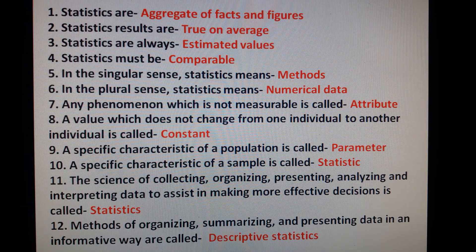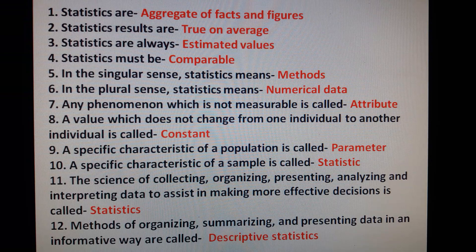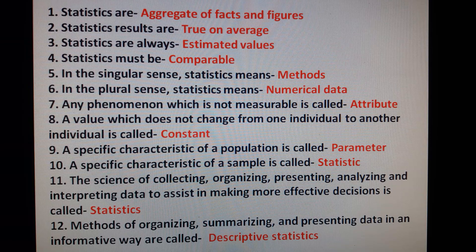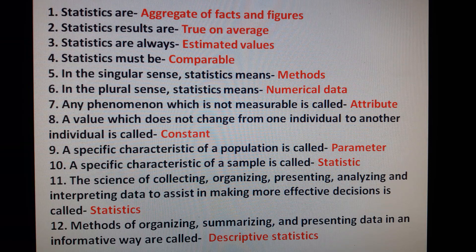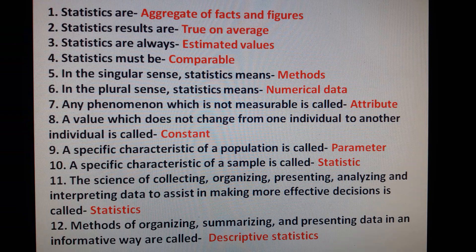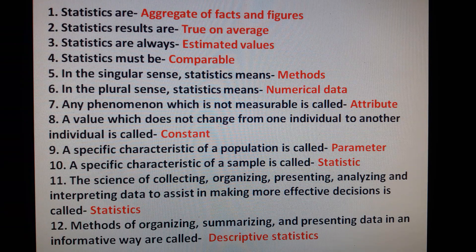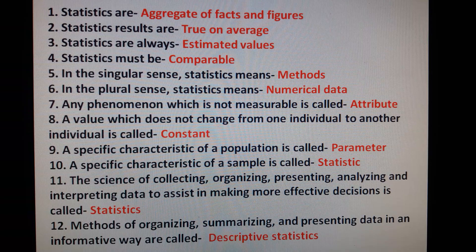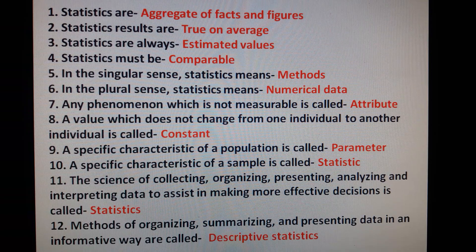7. Any phenomenon which is not measurable is called attributes. 8. A value which does not change from one individual to another individual is called constant. 9. A specific characteristic of a population is called parameter. 10. A specific characteristic of a sample is called statistics.